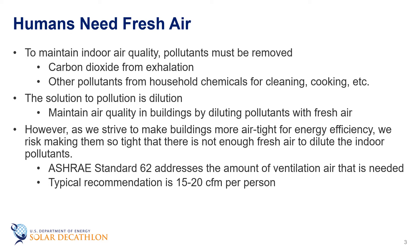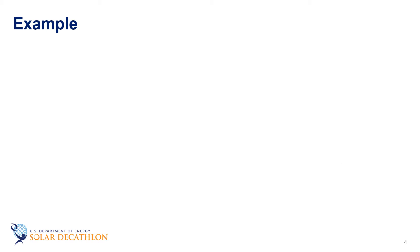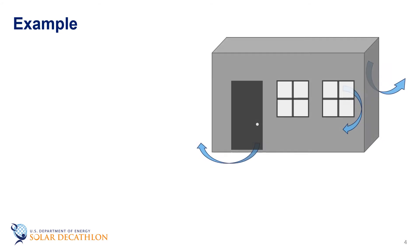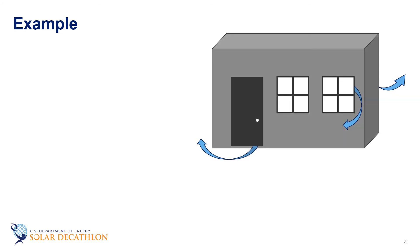Typically, the recommendation is somewhere around 15 to 20 cubic feet per minute per person. While that might only apply for when a person is in the space, some amount of ventilation should be provided when the building is not occupied. As an example, let's look at a sample building that we looked at in other episodes. We had specified an air exchange rate of 0.2 air changes per hour, or ACH.